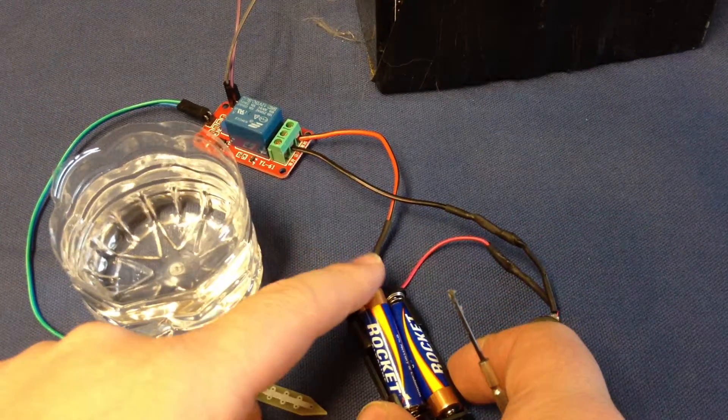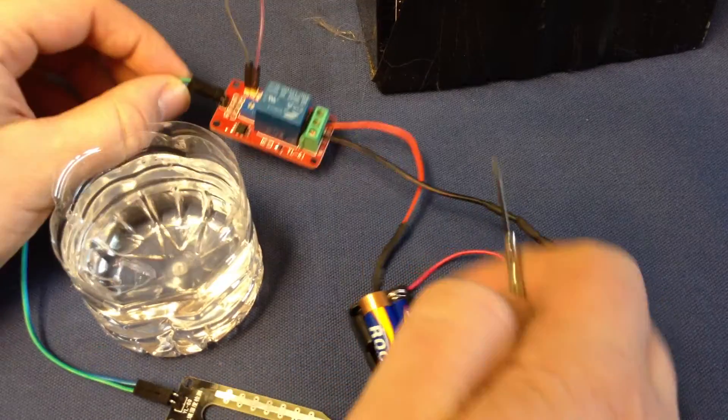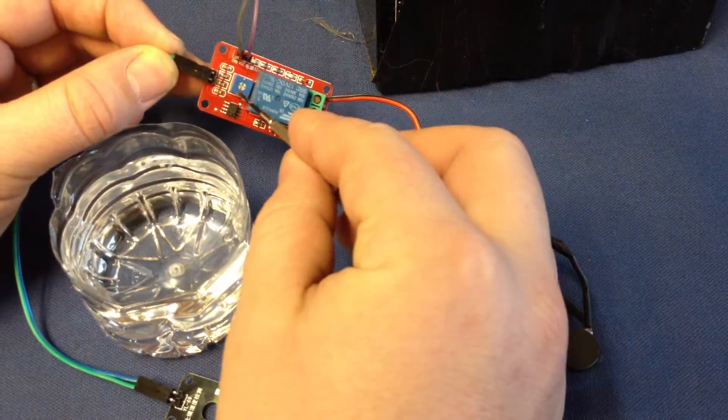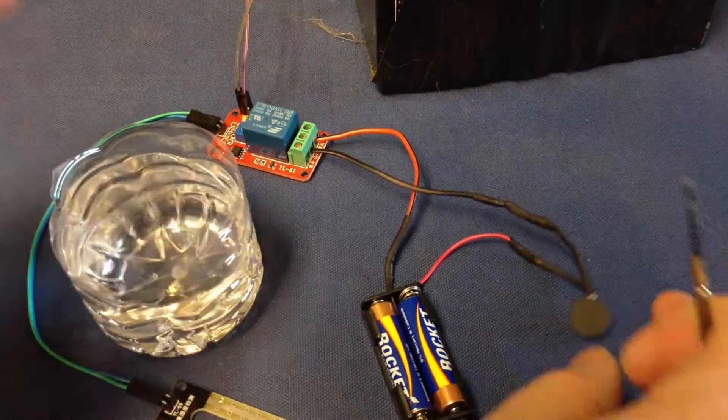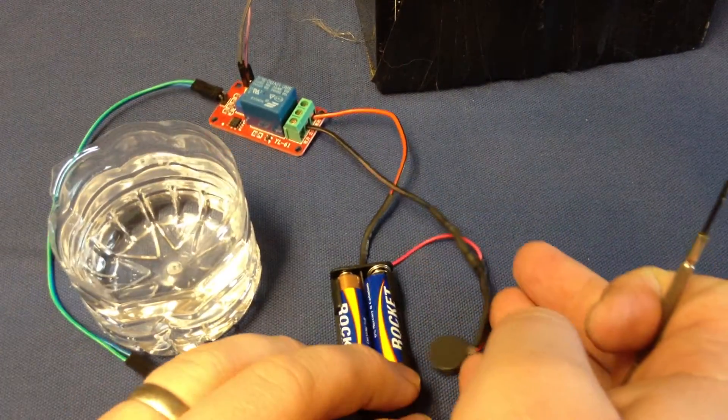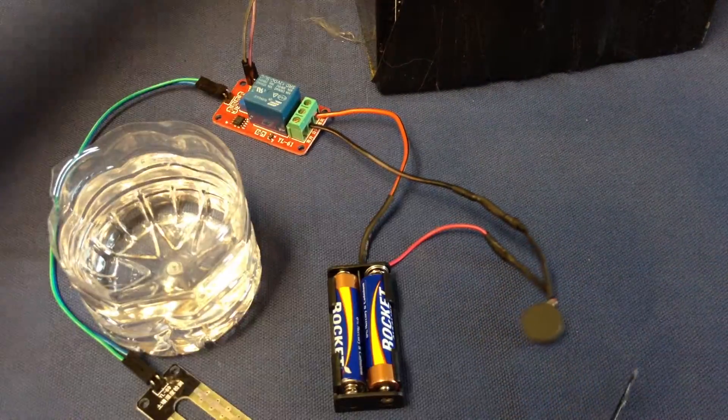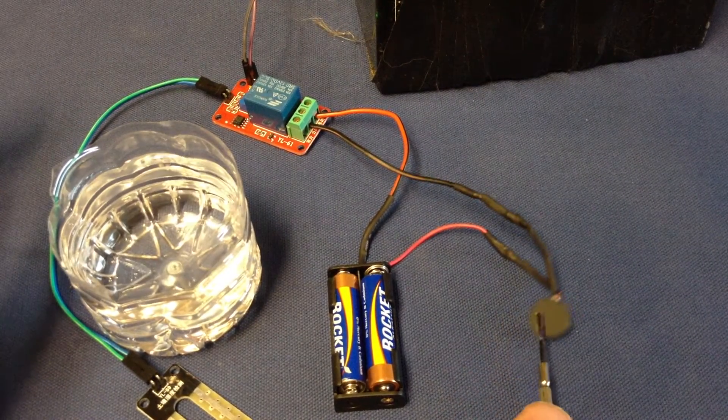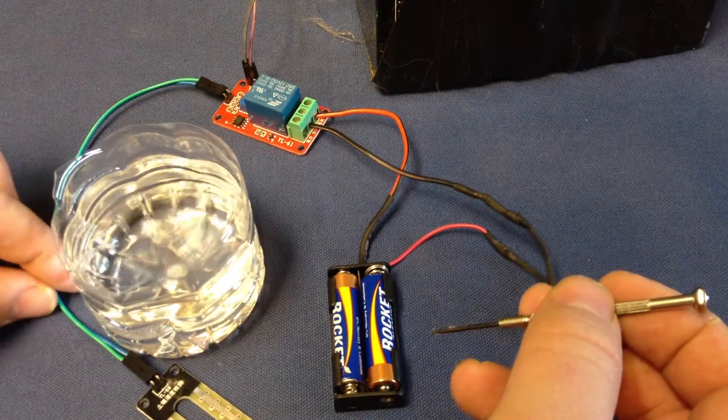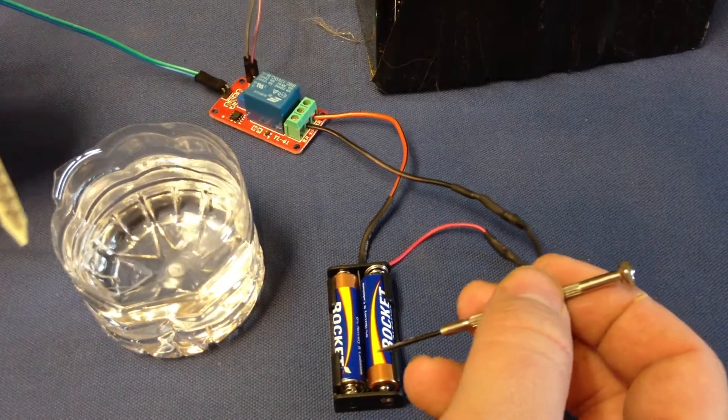And then you have this little screw right here which changes the sensitivity. Okay, so I turned it on. Oh wait, is this on? Okay, now it's on. The little motor is going. So I guess that would be normally open or normally closed, I'm not sure which one.